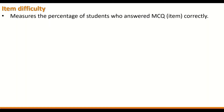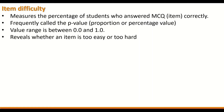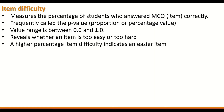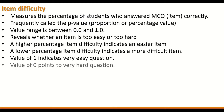Item difficulty measures the percentage of students who answered multiple choice question items correctly. It is frequently called the p-value, proportion, or percentage value. The item difficulty value ranges between 0 and 1. It reveals whether an item is too easy or too hard. A higher value indicates an easier item and a lower value indicates a more difficult item.